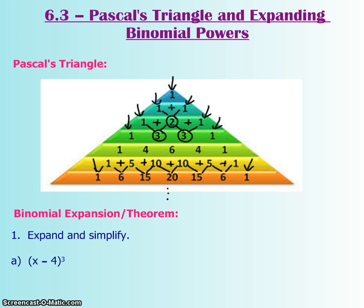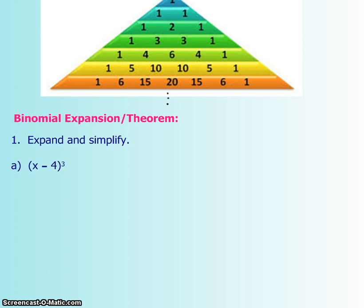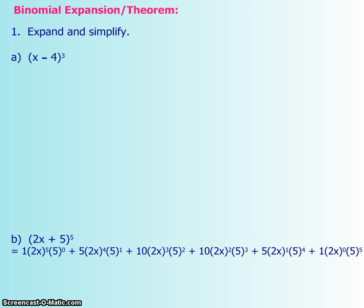End with 1. This triangle goes on and on forever. If you're willing to sit there and add up all these numbers, you're going to get a huge triangle. But how does it relate to binomial expansion or theorem? If you had a question such as this, you're going to expand and simplify.